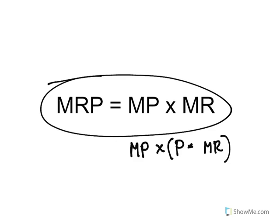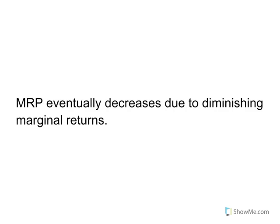Now we're going to graph it in just a second, but when we do, you will notice that it will eventually decrease. Why is that? Well, marginal revenue product eventually decreases due to diminishing marginal returns.